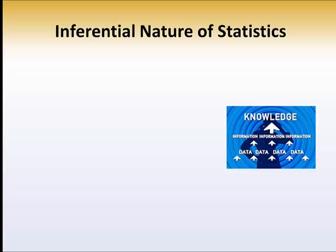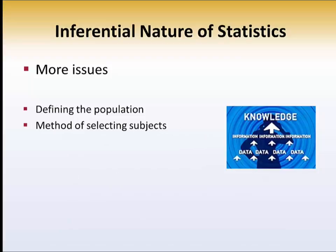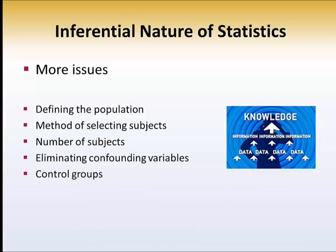Now it isn't always as simple as Jim makes it sound, because there are many issues that are involved in such a process. For example, how do you define the population? How do you know if a subject belongs to the population or not? There are methods of selecting subjects. The number of subjects that you need to select. Can you eliminate confounding variables? Are you going to include a control group? And it goes on from here, many things that we're going to have to learn about in order to conduct a research study.